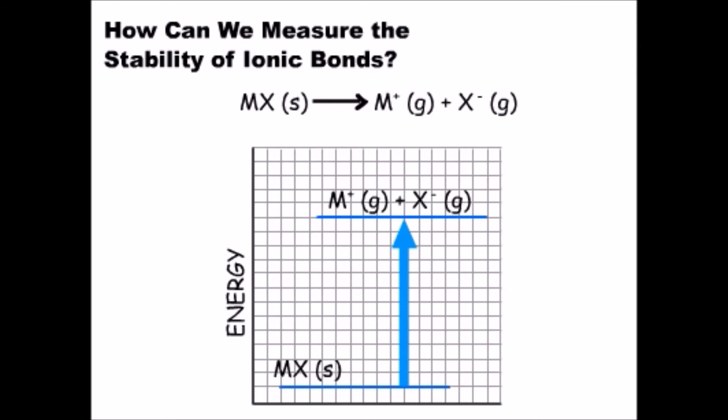Lattice energy of an ionic compound is typically much larger than the energy required to break covalent bonds. We will learn more about why this is when we study the structure of ionic solids.